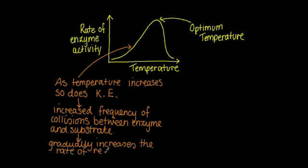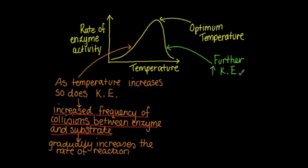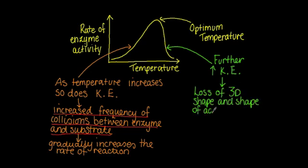But beyond the optimum temperature, this continuing increase in kinetic energy results in a loss of 3D structure from the enzyme and therefore a change in its active site. If the substrate can't fit into it, the enzyme is referred to as being denatured and this reduces the rate of reaction.